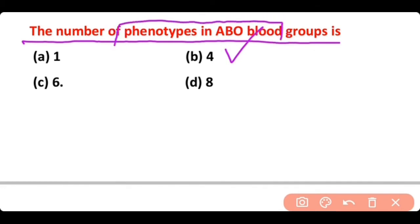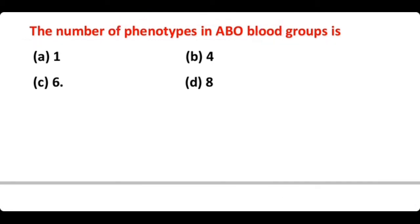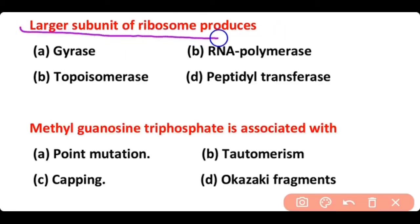The larger subunit of the ribosome produces: gyrase, RNA polymerase, topoisomerase, or peptidyl transferase. The correct answer is option D. The large subunit of the ribosome produces peptidyl transferase enzyme.